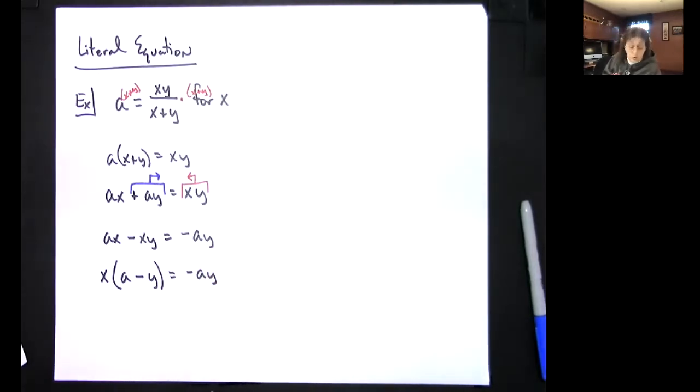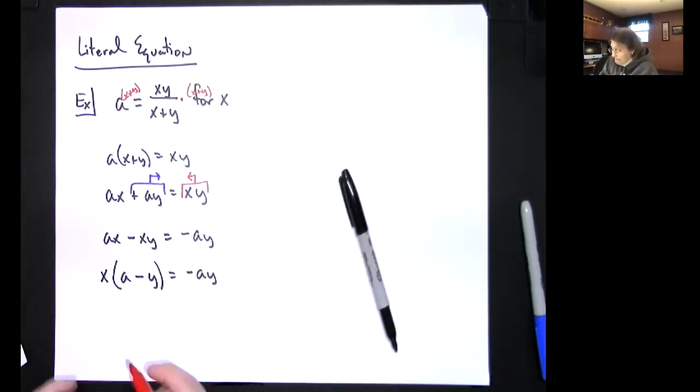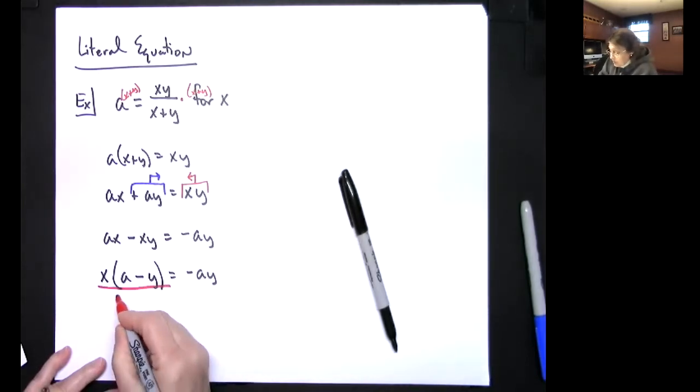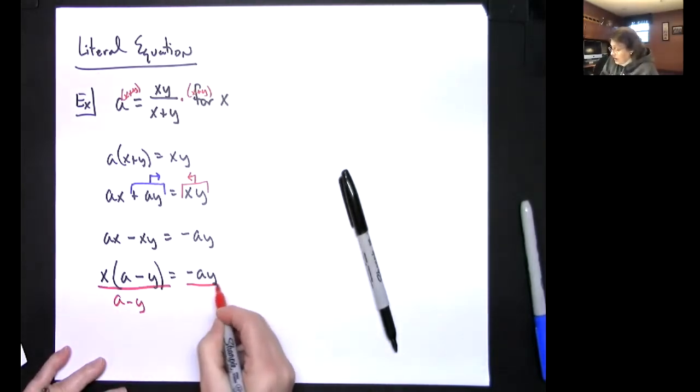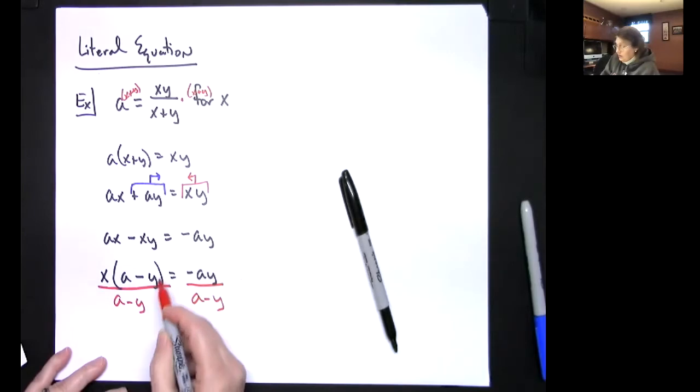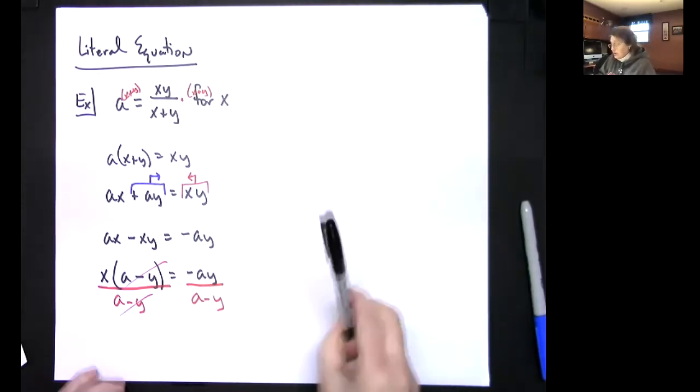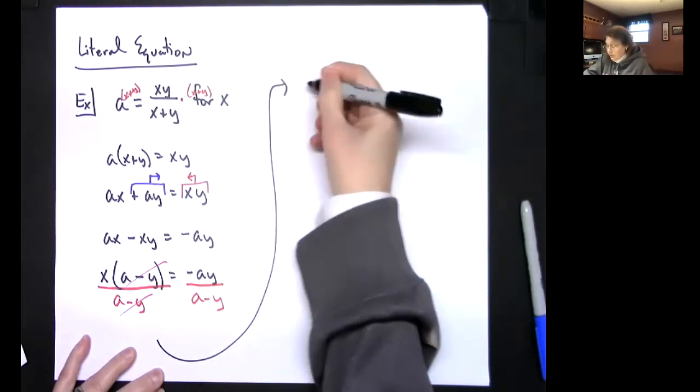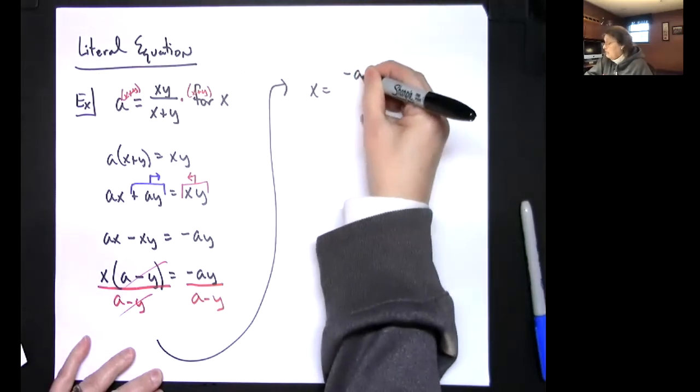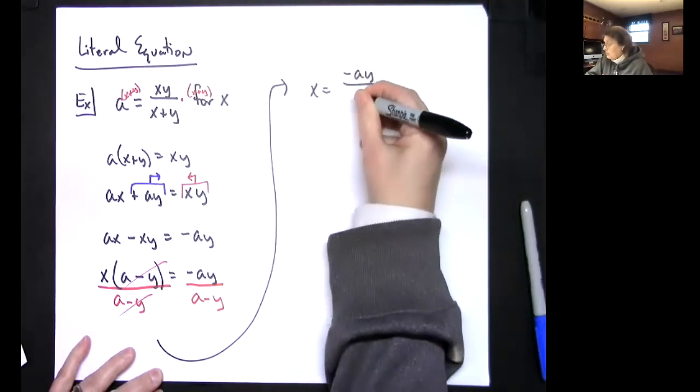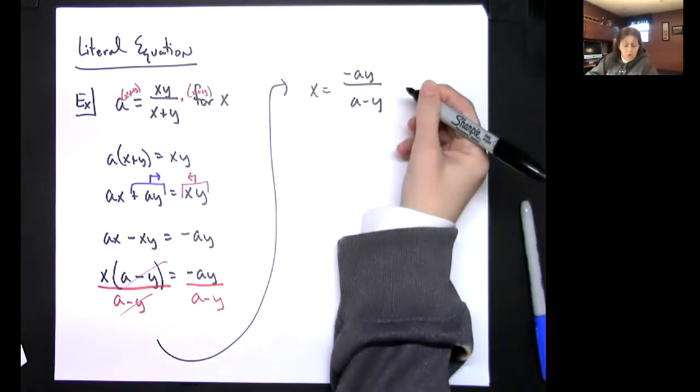So let's divide both sides by that binomial right there. I'm going to actually show the step. So divide and divide. Those two things are going to cross out. I'm going to come up here just because we're running out of room. So I'm going to have x equals negative ay all over a minus y.